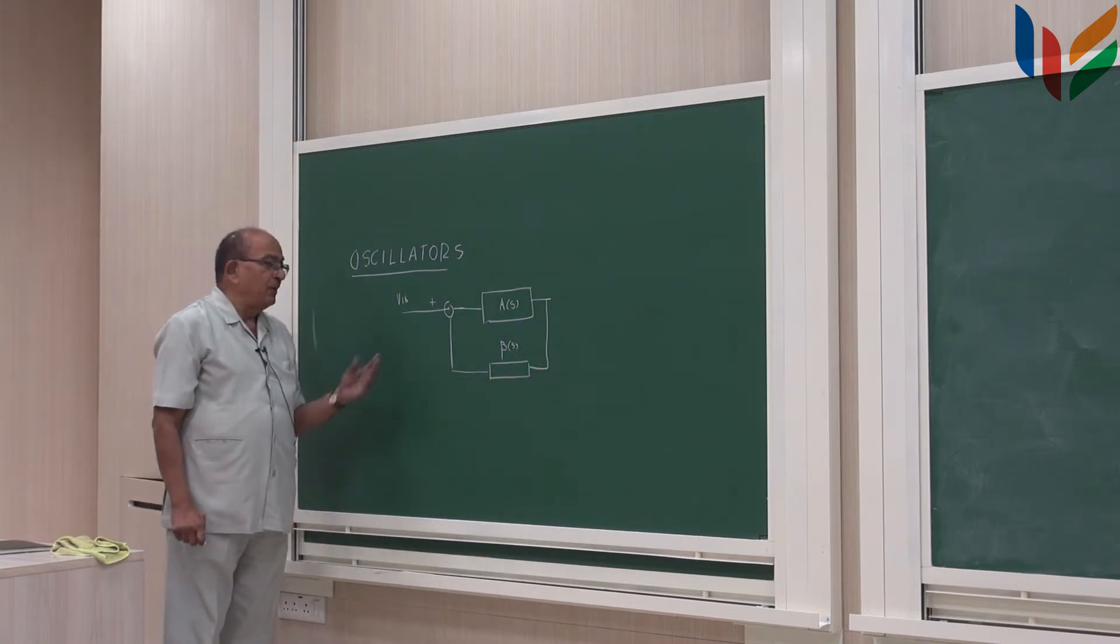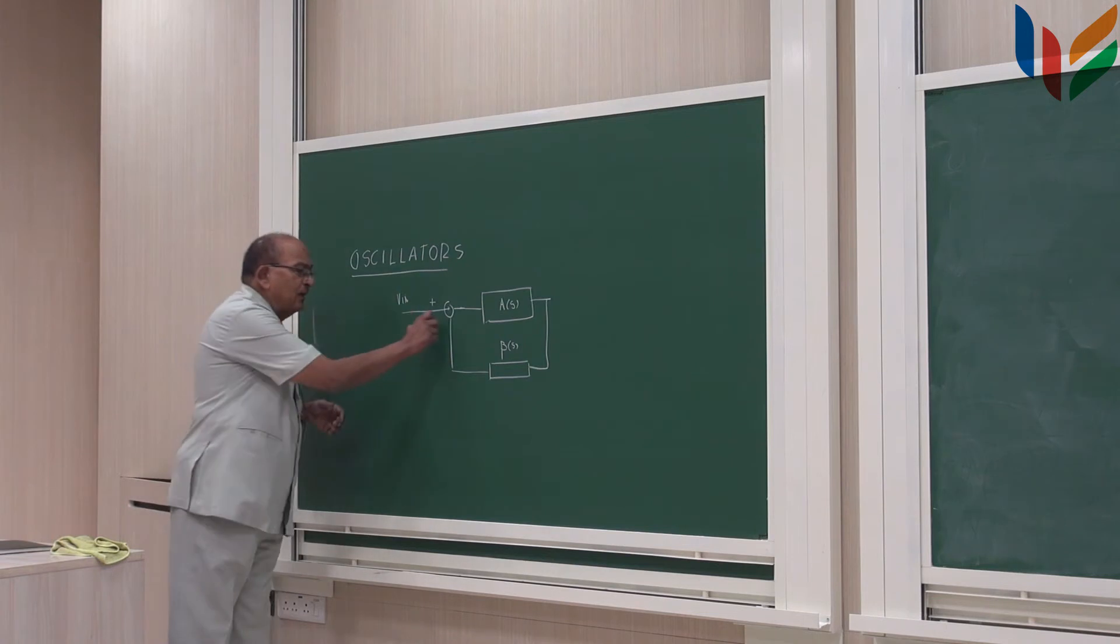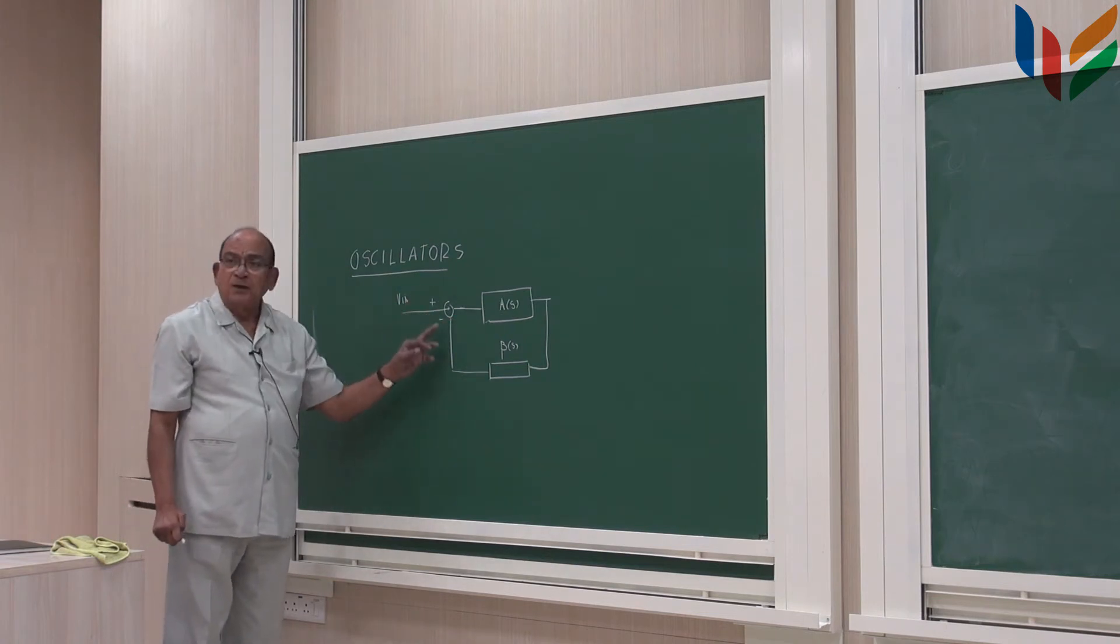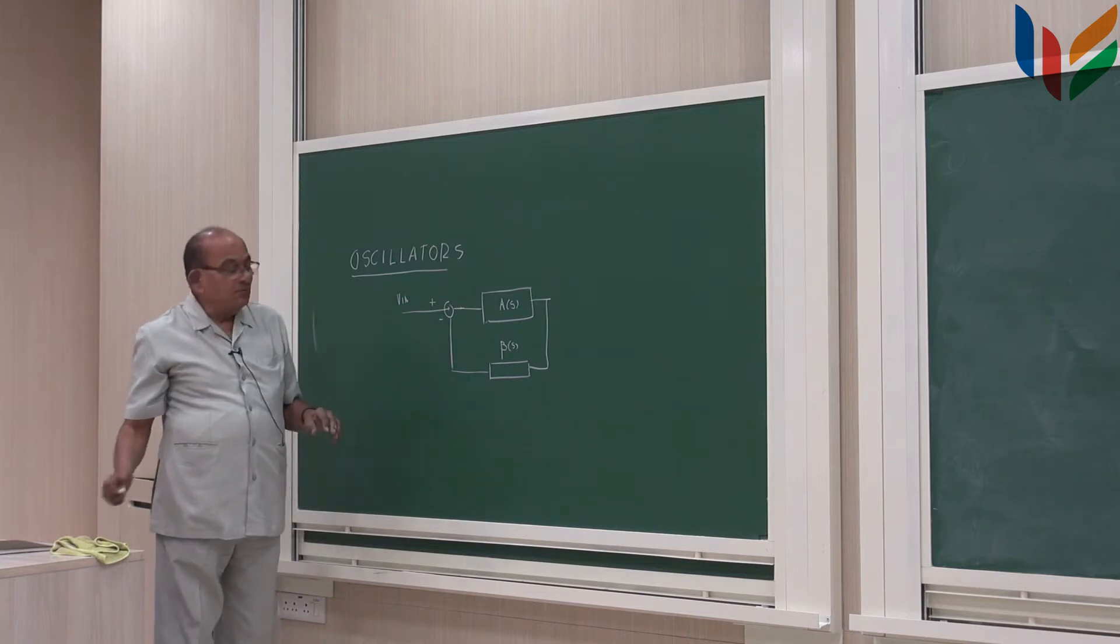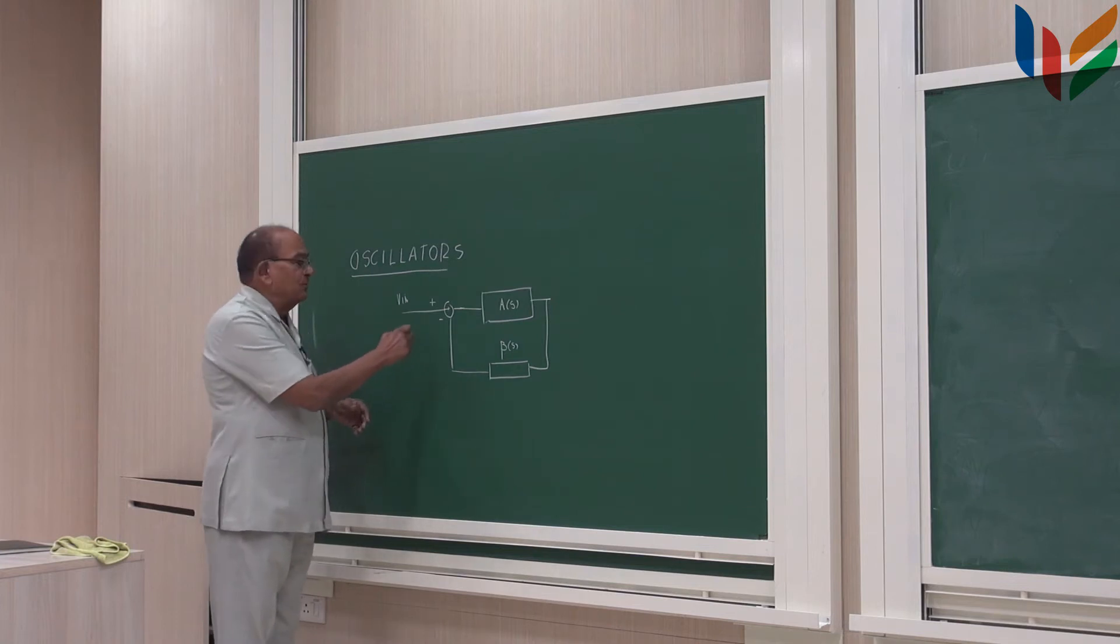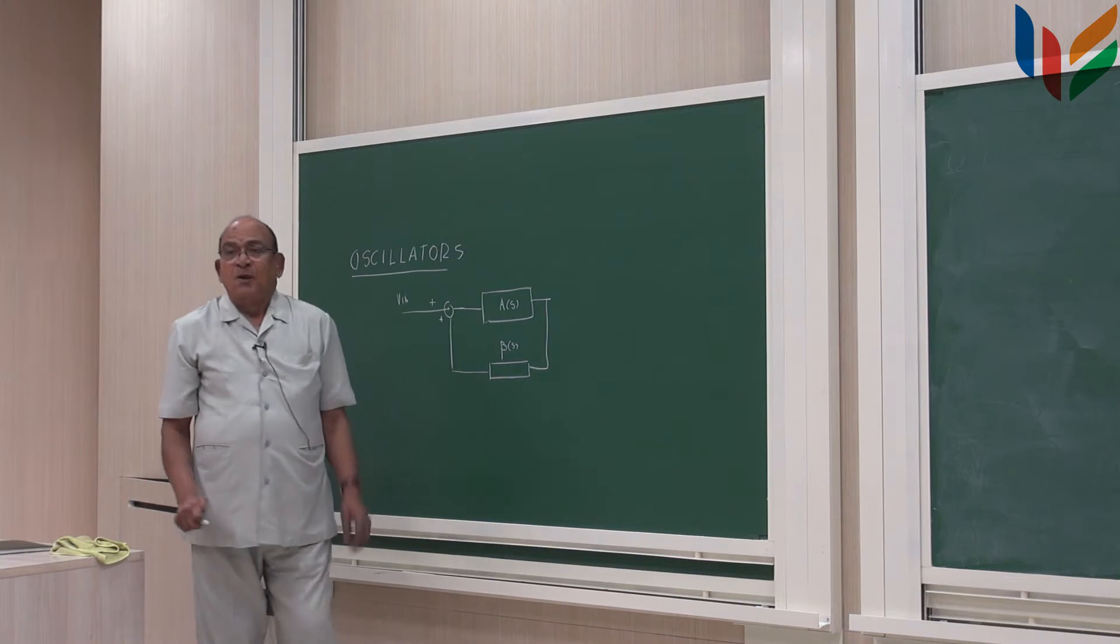In the feedback analysis, we put a minus sign here. And we talked about the error being this minus this. Just for oscillation is not necessary to do, but it becomes easier to see. Let us put a plus here, okay?